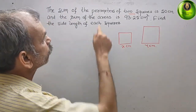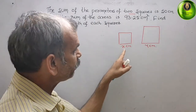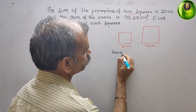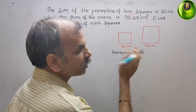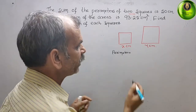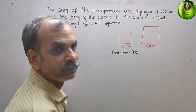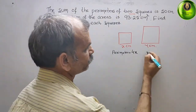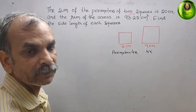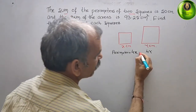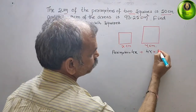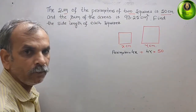Now, what they have told? Perimeters. The perimeter of this square is what? The perimeter of a square is 4 × side. So we can say it is 4x for the first square and 4y for the second square. They have told the sum, that means addition. So if you add 4x + 4y, that gives you 50.